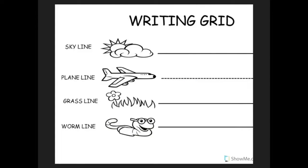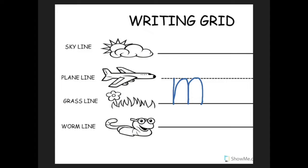L. L is a skyline letter. Put your pencil on the skyline, pull down to the grass line. L, lamp, l. M. M is a plain line letter. Put your pencil on the plain line, pull down to the grass line, bounce back up, make a hump, and do it again. M, man, m.